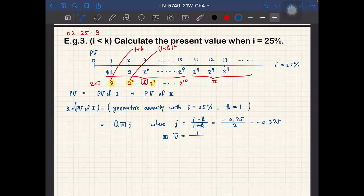And we can also calculate V tilde, which corresponds to J, 1 over 1 plus J. So this is 1 over 1 minus 0.375, so this becomes actually 1.6, and it's also strange. So usually V tilde is smaller than 1, but here it's larger than 1 because of the negative interest.